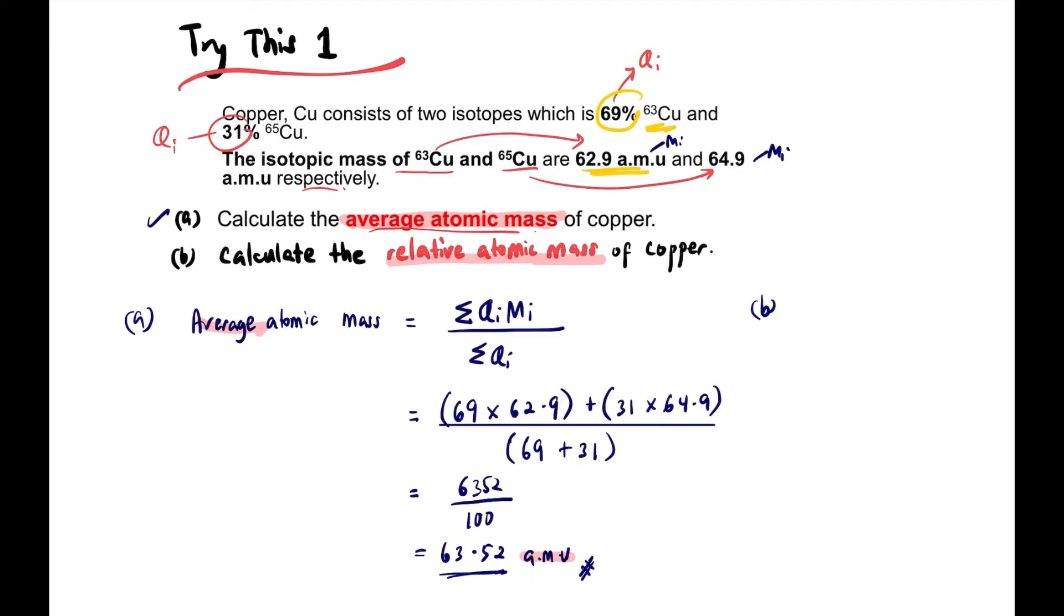Question B asks for relative atomic mass of copper, so Ar. Remember, relative has no unit. The formula is average mass of copper divided by 1/12 times mass of carbon-12. We have the value 63.52 AMU divided by 1/12 times 12 AMU. Cancel AMU, cancel 1/12 with 12, so the answer is 63.52 but this time no unit because it's relative.